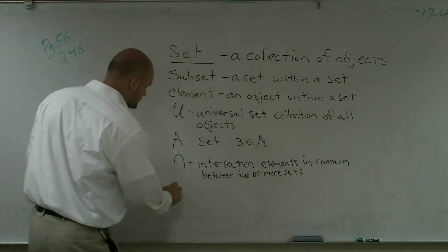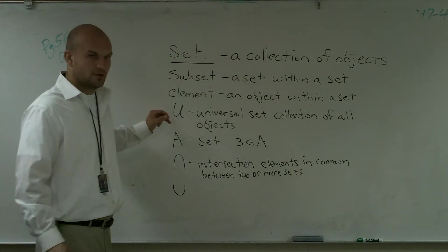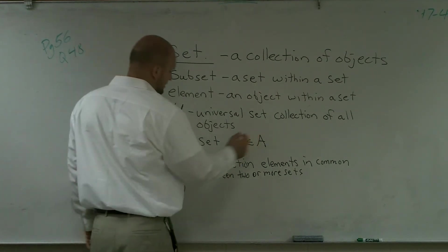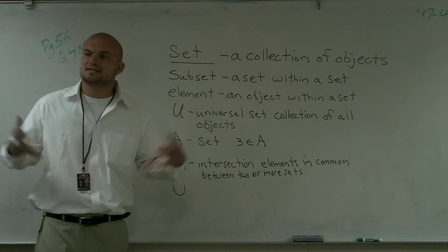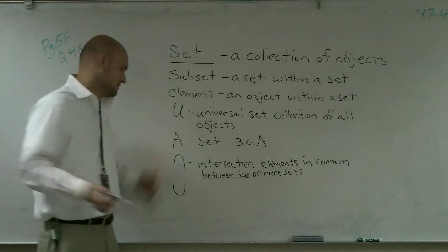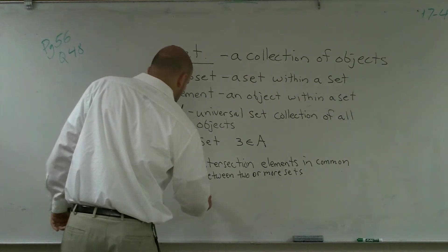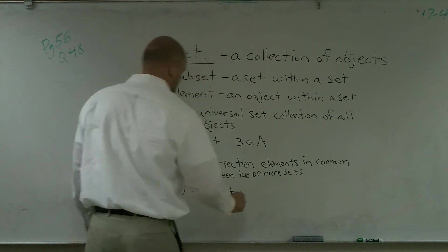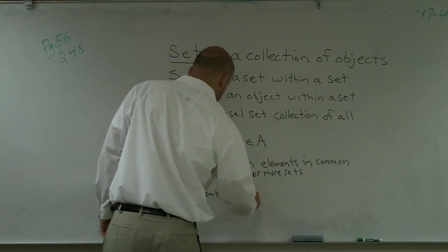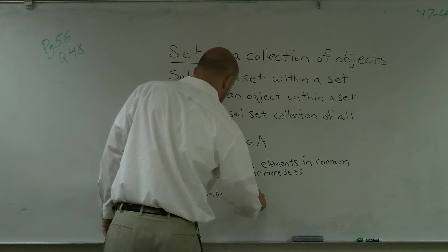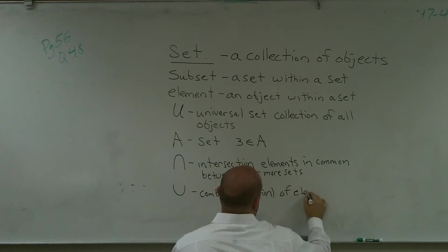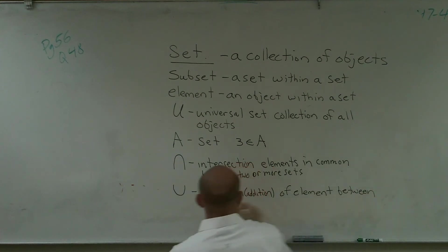And then we have our union. Notice the union is different than the universal set. Universal is a big U, our union represents the two or more sets combined. So they're added together. So that is the combination of elements between two or more sets.